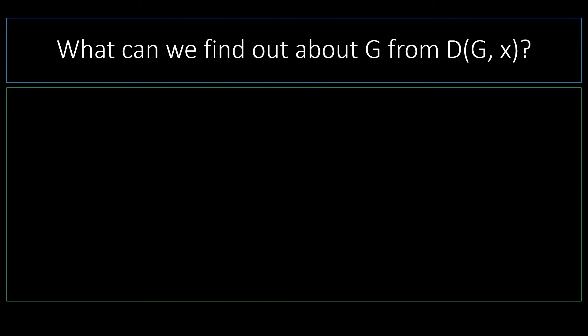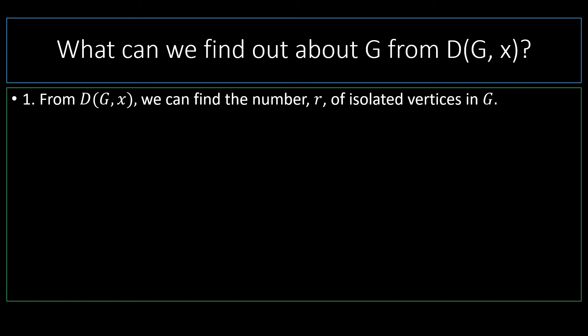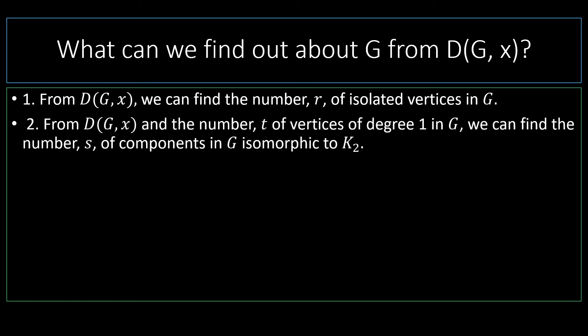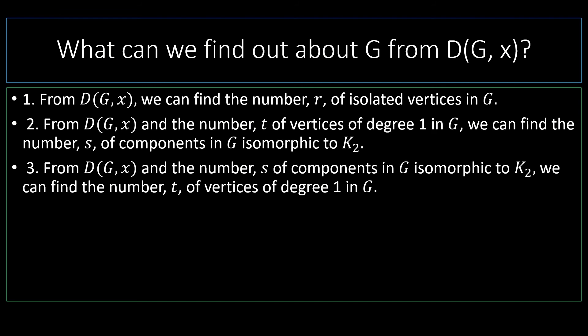From only the domination polynomial of a graph g, we can find the number r of isolated vertices in that graph. Also, if we have the domination polynomial as well as the number t of vertices of degree one, we can find out how many components are isomorphic to the complete graph on two vertices, K2. Finally, if we have the domination polynomial and the number s of components isomorphic to K2, we can find the number of vertices of degree one in our graph.